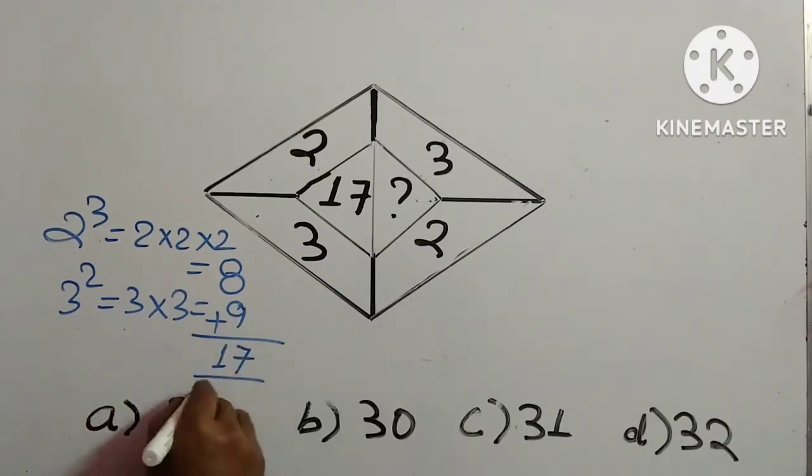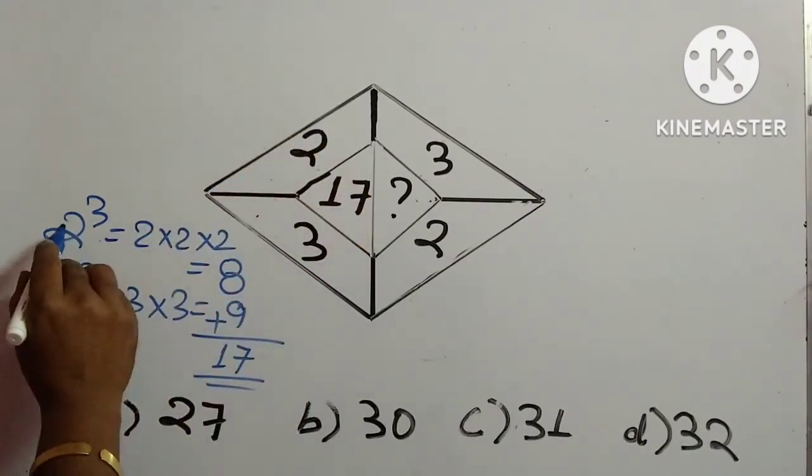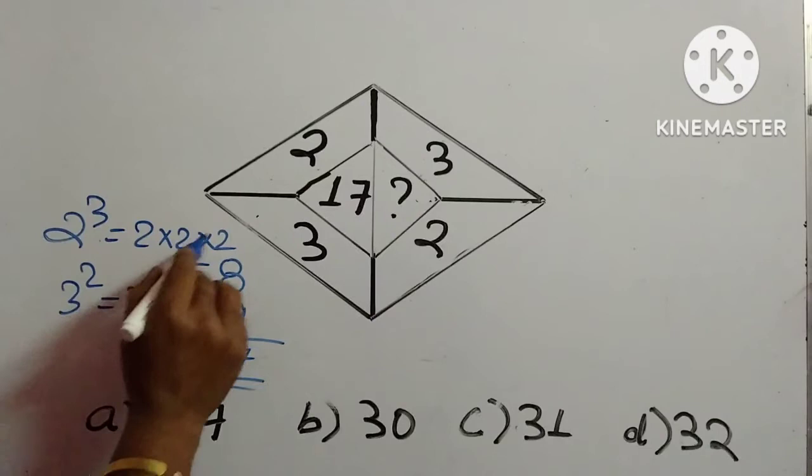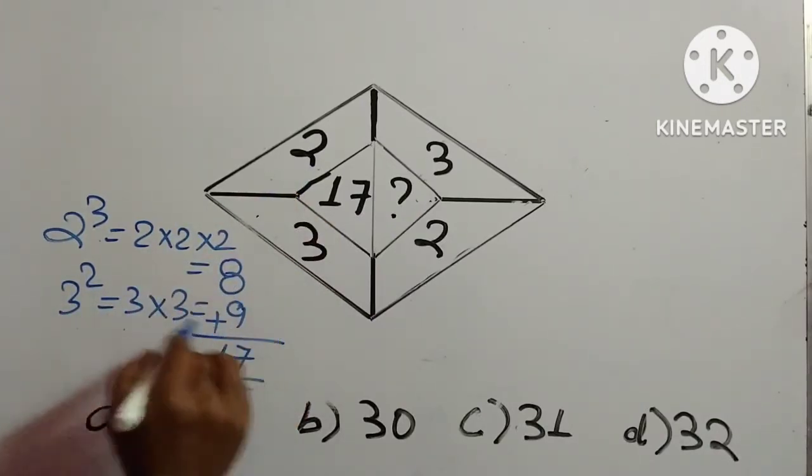it comes to 17 which is written. So what we are doing - we have taken 2 cube and this one we are squaring it and then we are adding it.